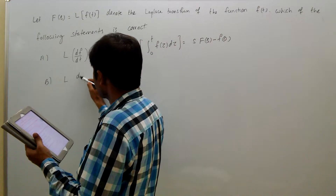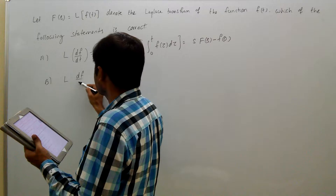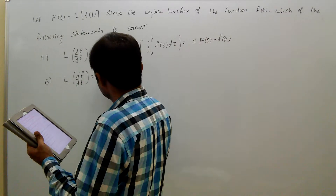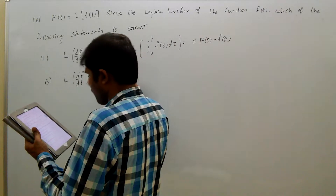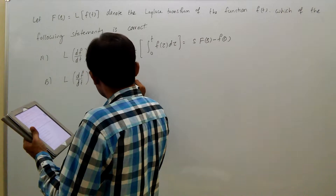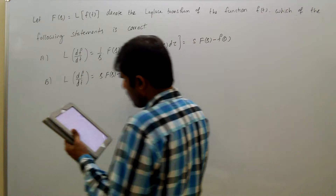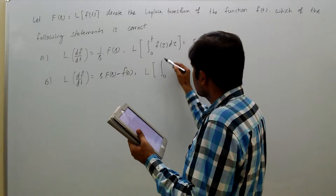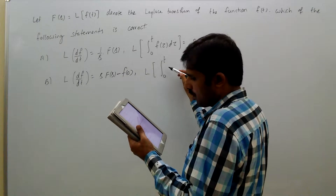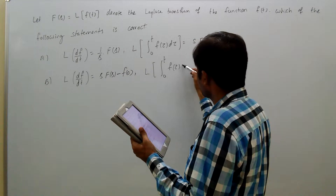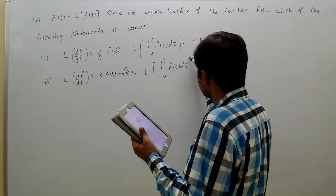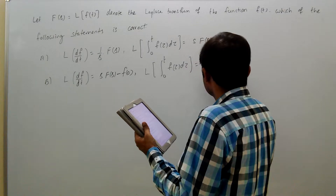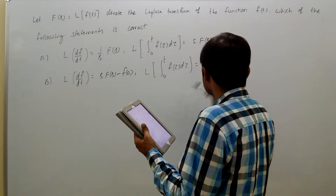Option B: Laplace transform of dF/dt equals S times F of S minus F of 0. Laplace transform of the integral from 0 to t of F(tau) d-tau equals dF/dS.